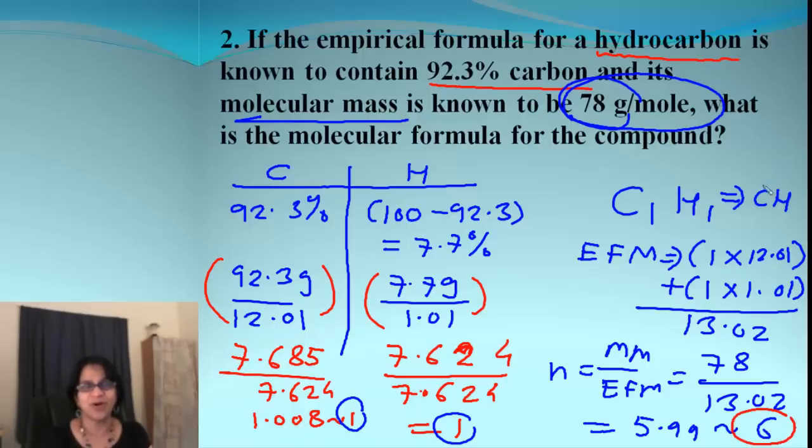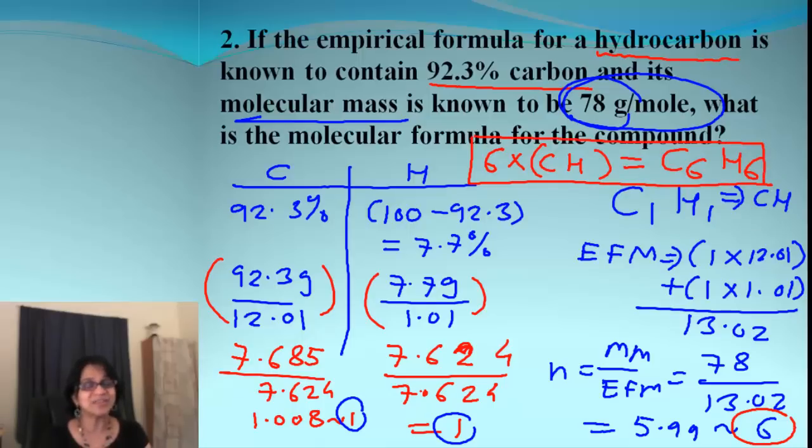How do we go from the empirical formula CH to molecular formula? Simply multiply by n, or times 6. So the molecular formula becomes C6H6. There we go, we got the molecular formula. Did you all understand that?